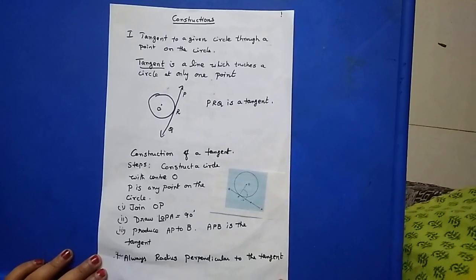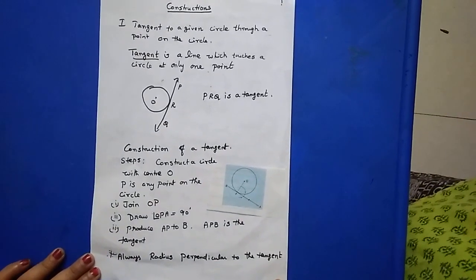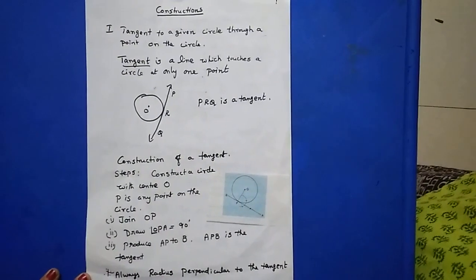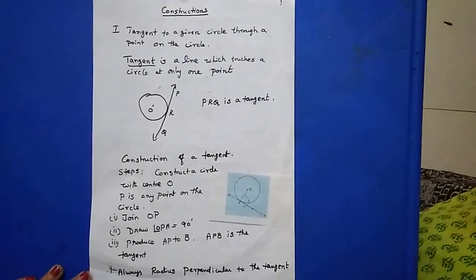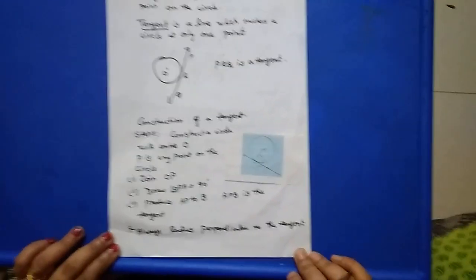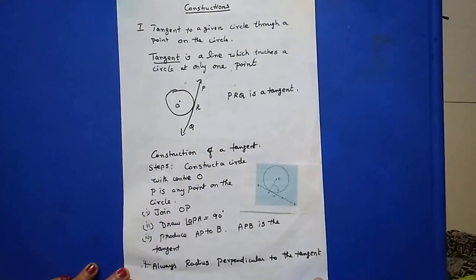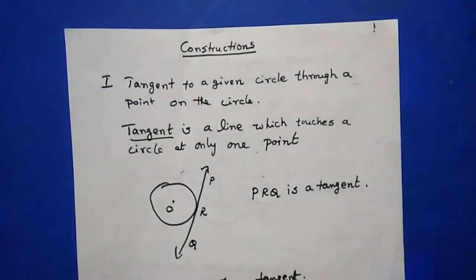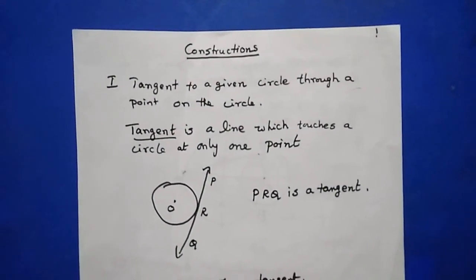Today I am going to teach you constructions only. There are four constructions: one, tangent from the external point; two, tangent through a point on the circle; three, incircle; and four, circumcircle. Now, what is a tangent?